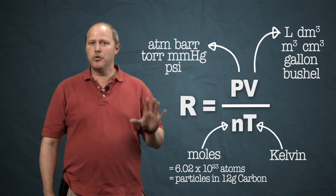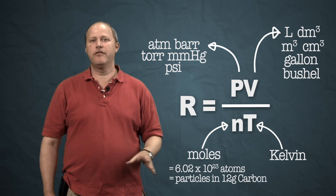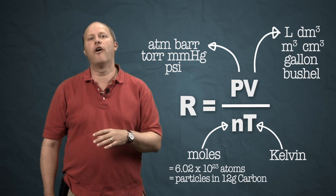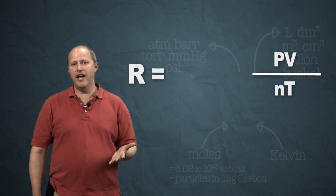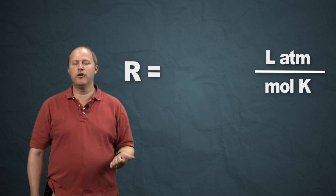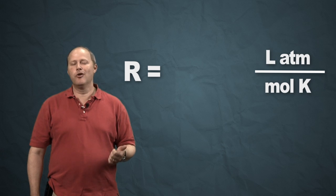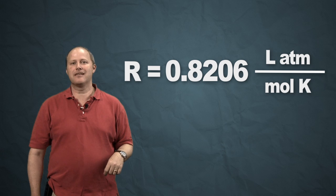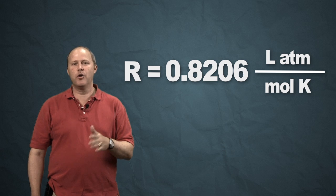And so depending upon what choice of units you have in the problem you're going to have to pick the correct units for R. So for example if you had pressure in atmospheres and volumes in liters, it'd be 0.8206 liter atmospheres per mole per Kelvin.